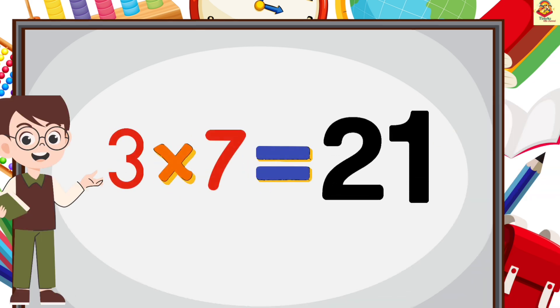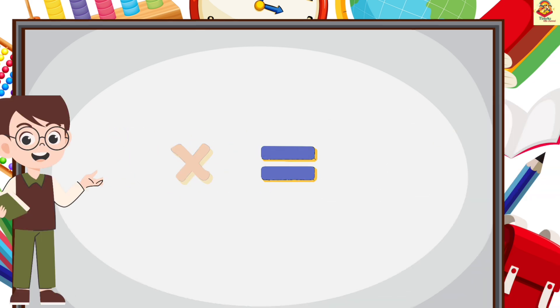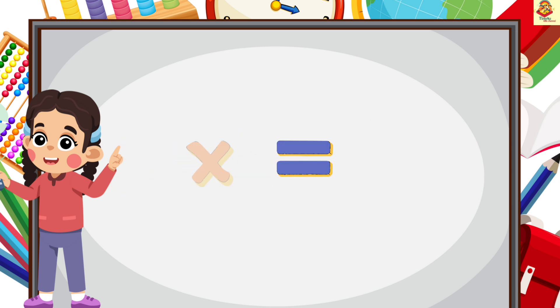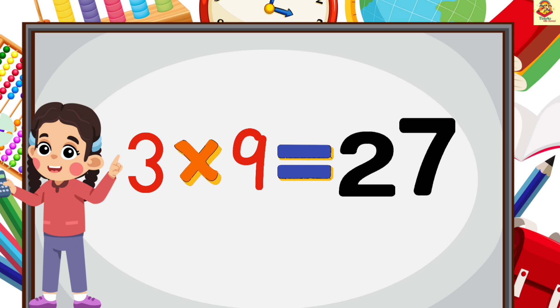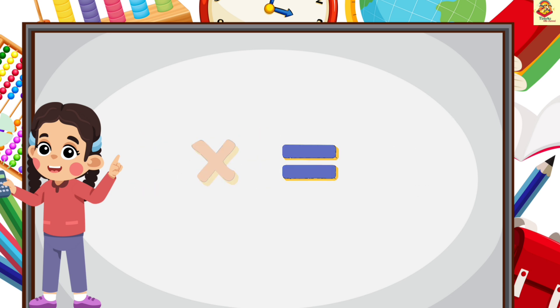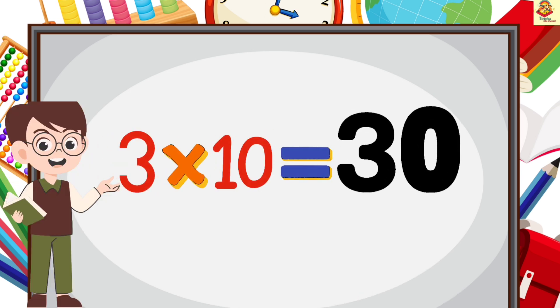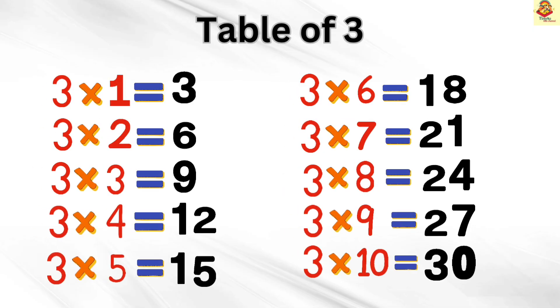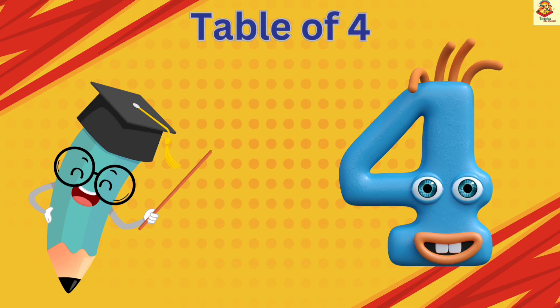3 7's are 21, 3 8's are 24, 3 9's are 27, 3 10's are 30. Awesome! Good job!